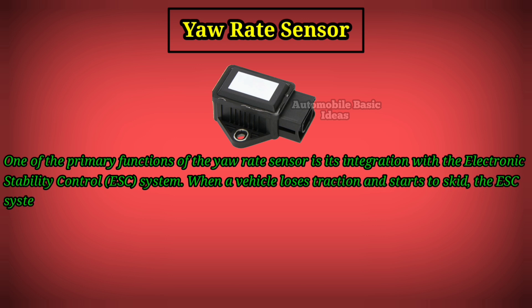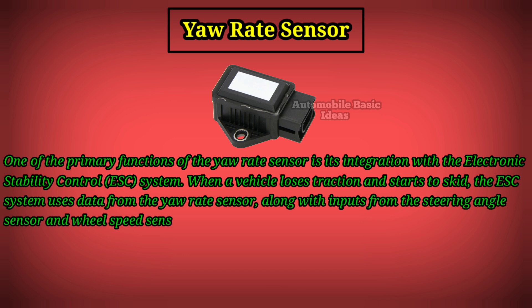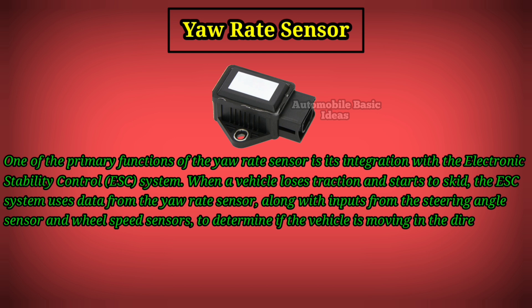When a vehicle loses traction and starts to skid, the ESC system uses data from the yaw rate sensor, along with inputs from the steering angle sensor and wheel speed sensors, to determine if the vehicle is moving in the direction intended by the driver.